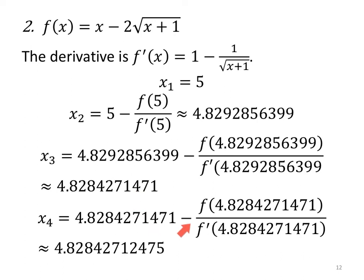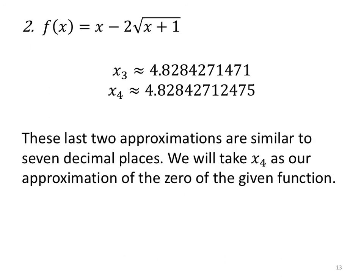x₄ = 4.82842712475, and I subtract the ratio of the function evaluated there divided by the derivative evaluated there. And I end up with 4.82842712. Oh look, right back here. This is where they differ. That's definitely going to take up three decimal places. We can see these last two are actually similar to seven decimal places. We'll take x₄ as our approximation of the zero of the given function, which means if you put this value 4.82842712475 in for x, your output should be super close to zero, like 0.000 something. We should be very close to zero.